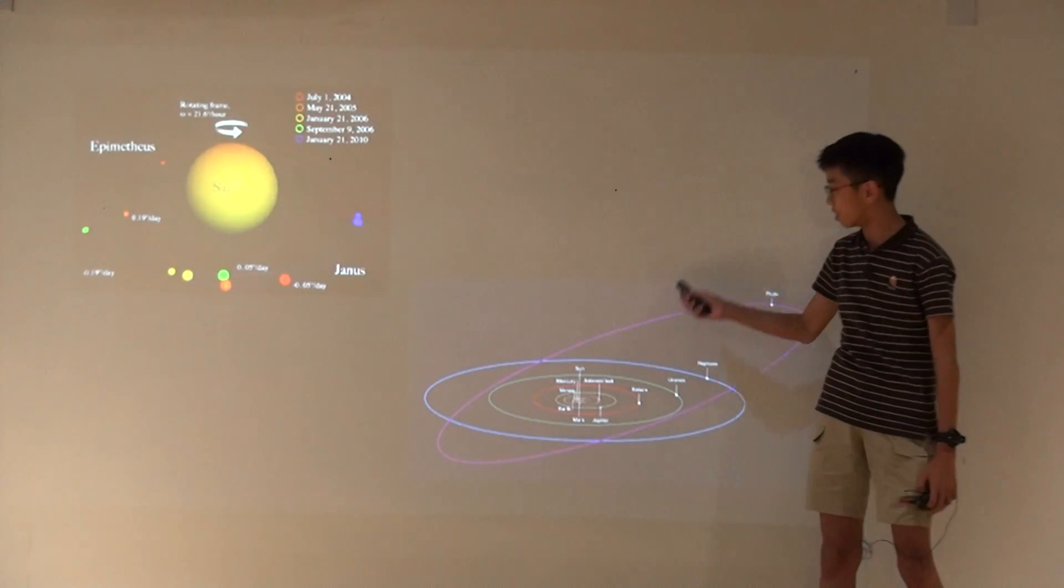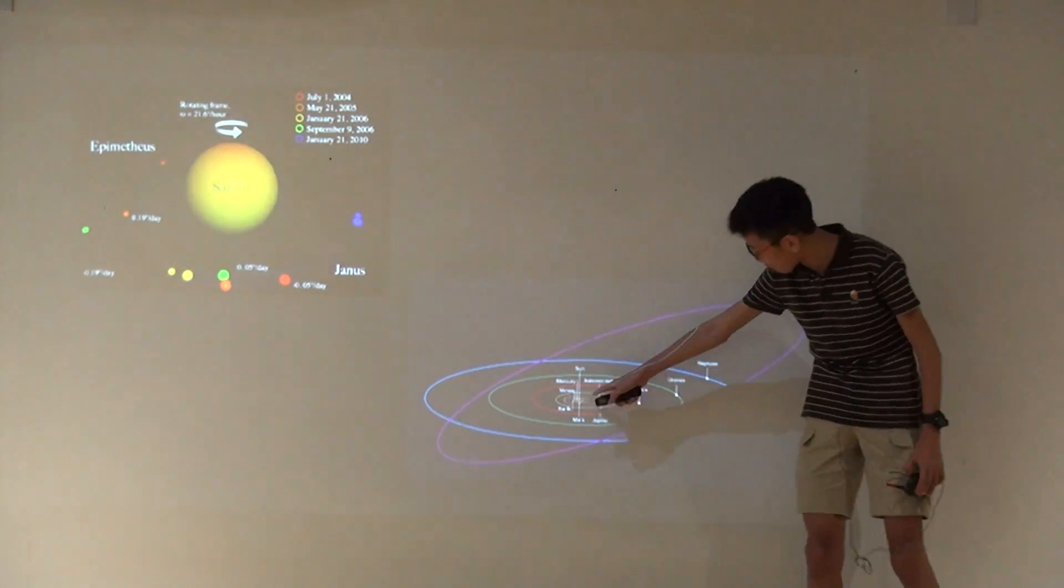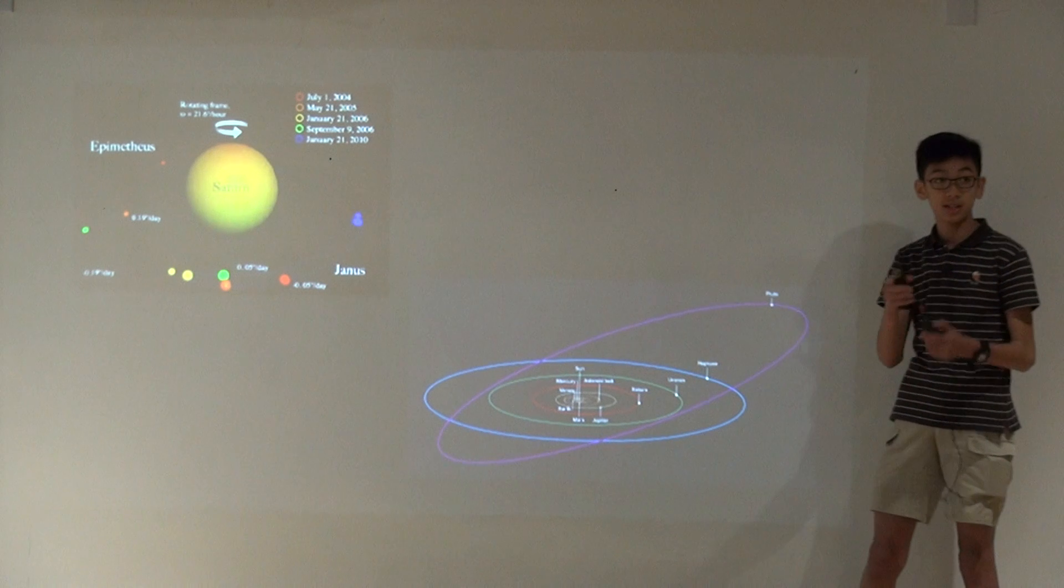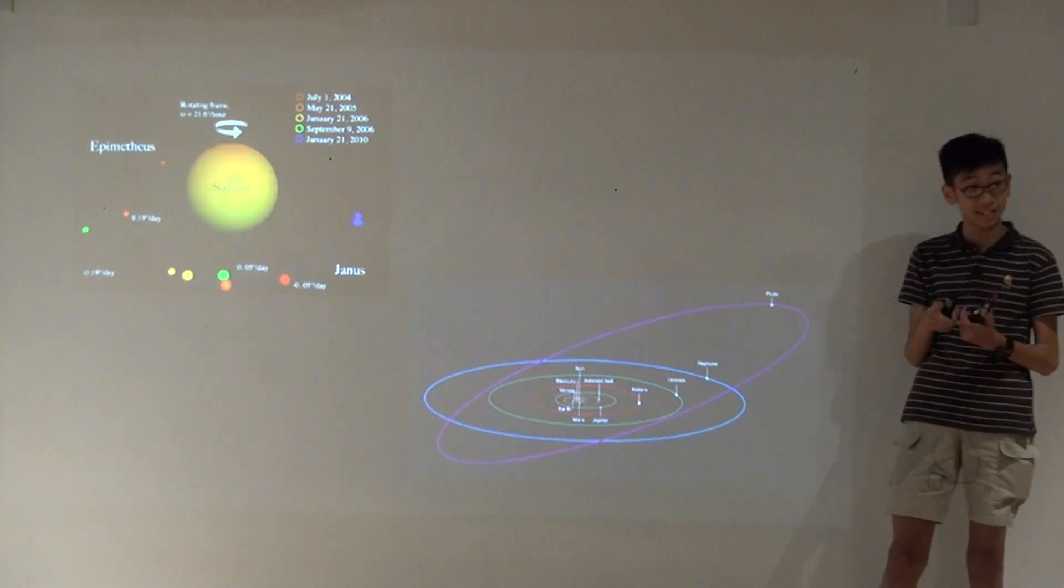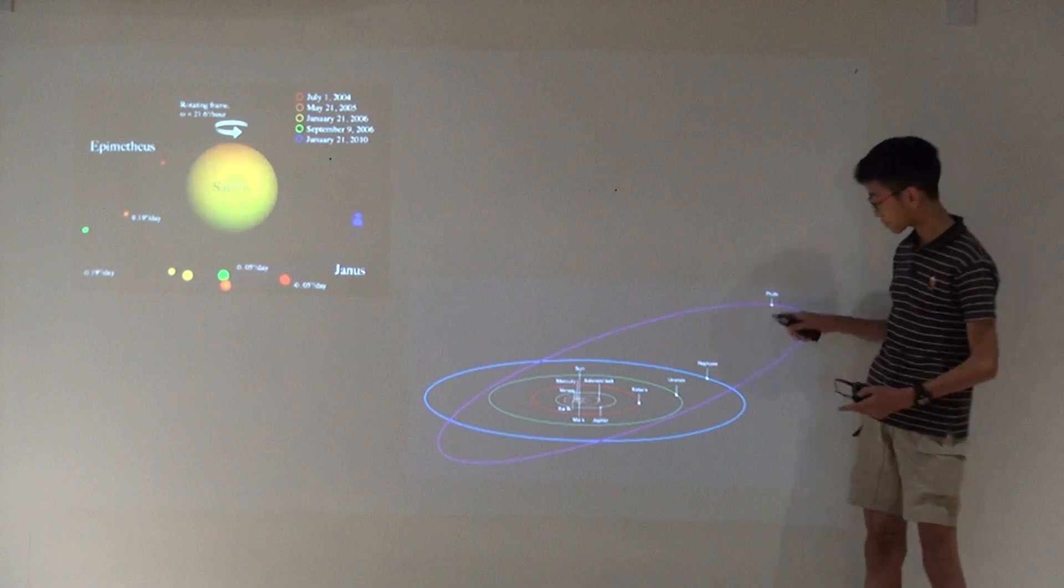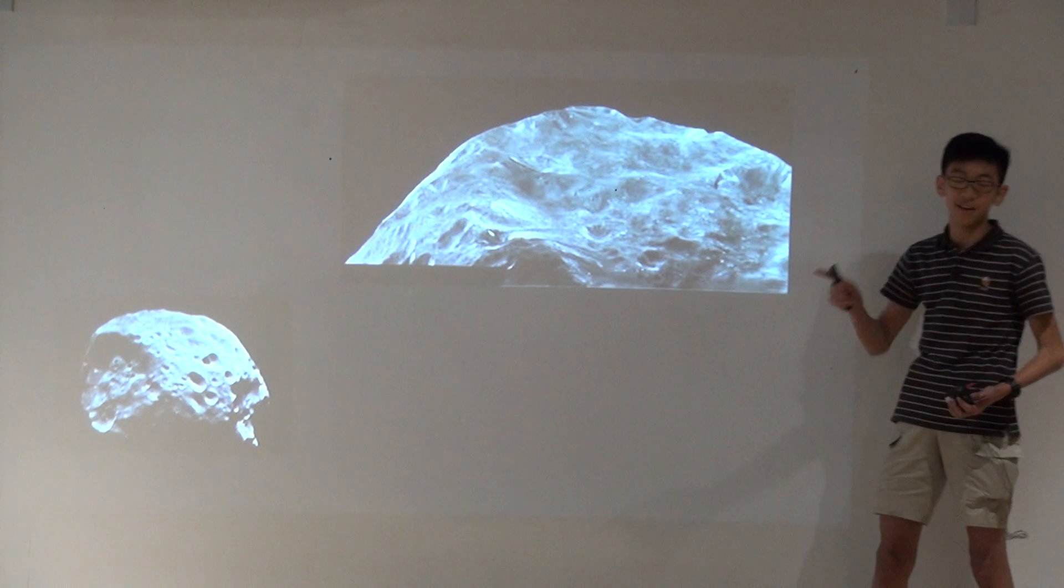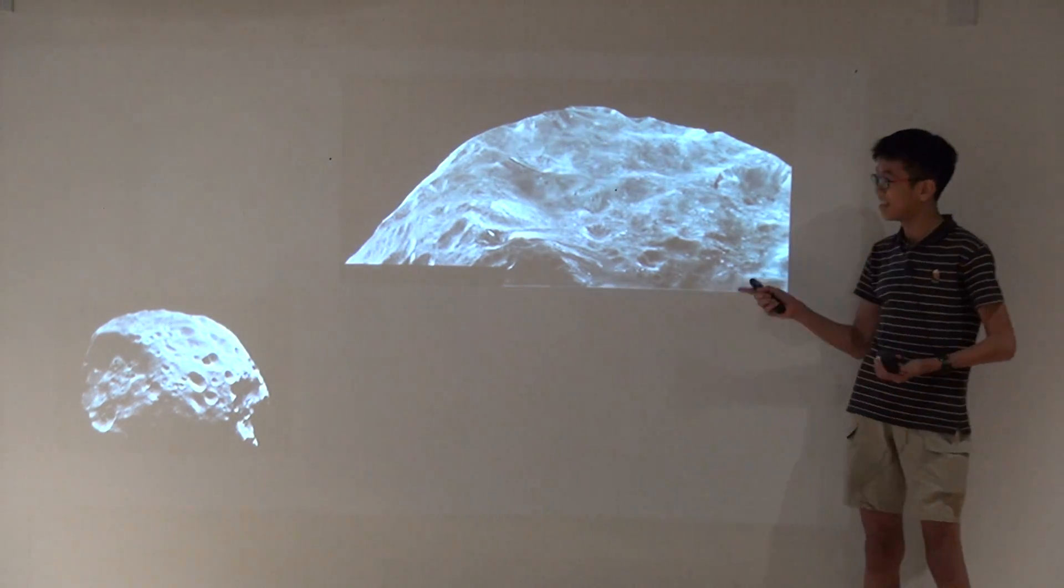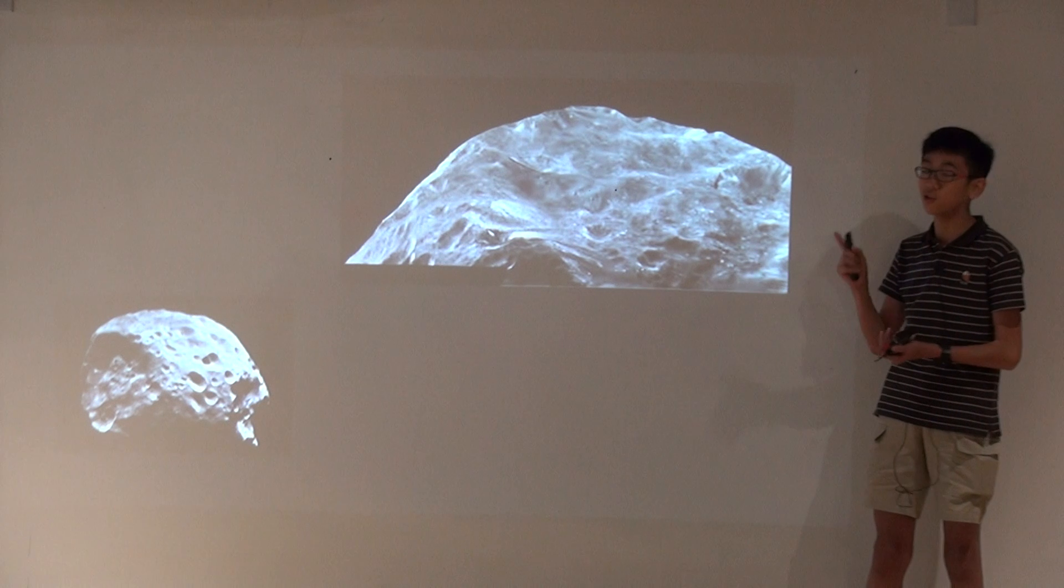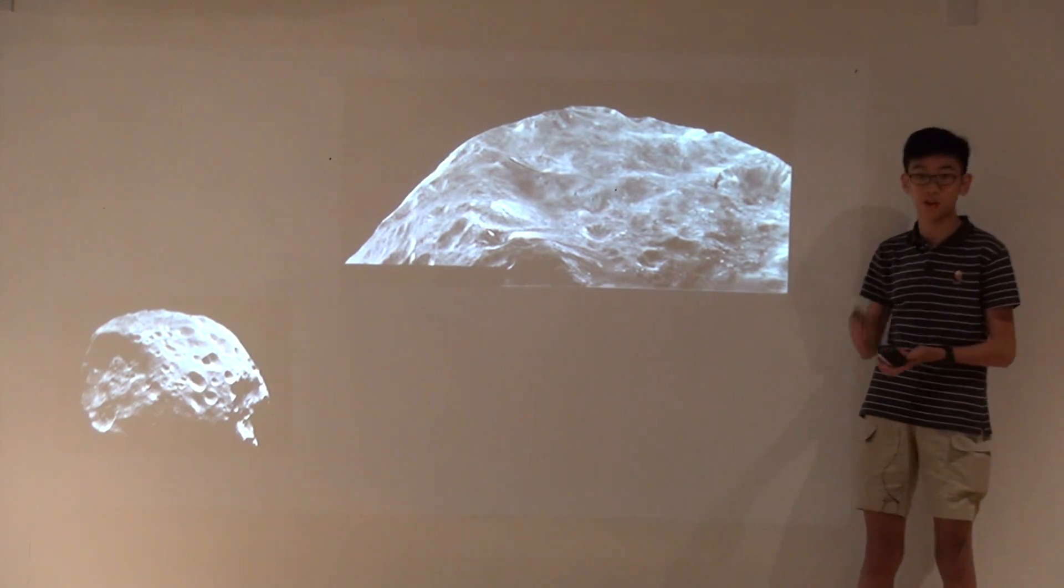And the orbits of the moons, like it goes around Saturn. Sometimes the moons go side by side, which sometimes they get trapped together. And I forgot to say that Phoebe goes anti-clockwise of Saturn, but all the other moons go clockwise.